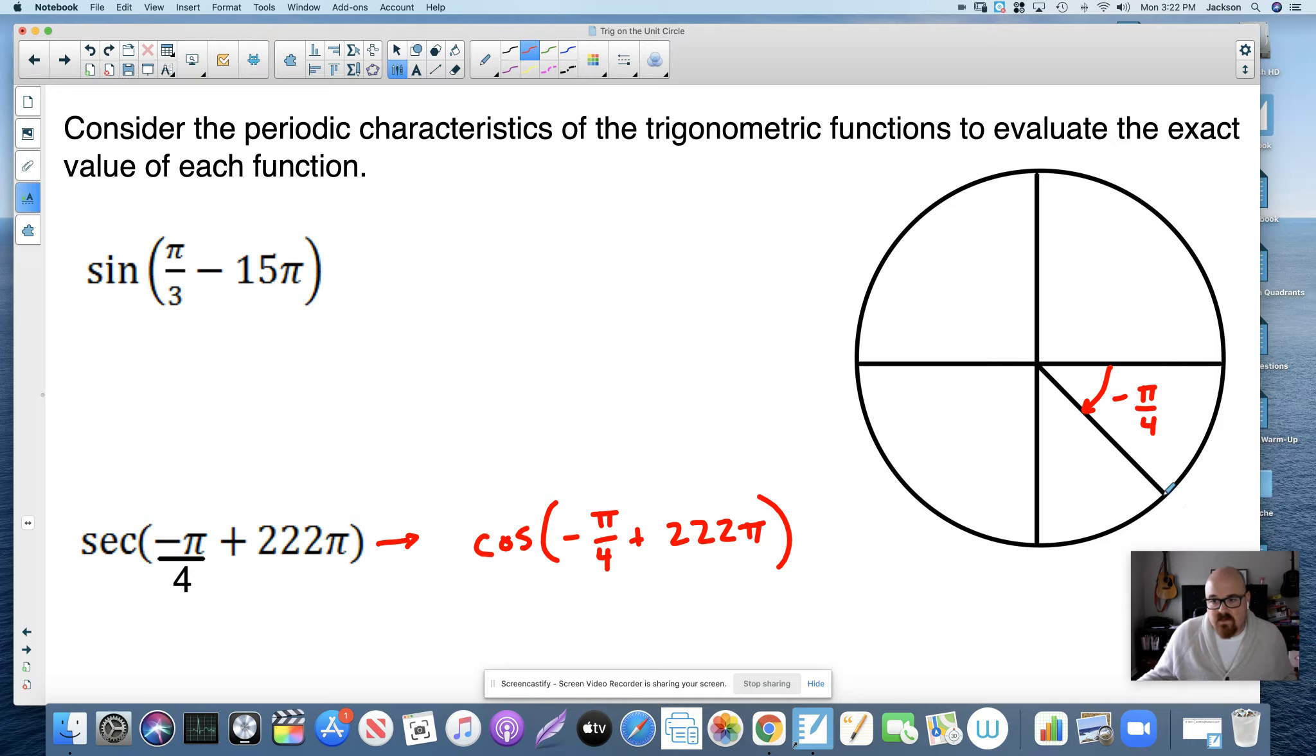Now, this is where negative pi over 4 is. It's right here. Where's negative pi over 4 and then adding 222 pi? I don't want to make you dizzy, but let's think about this for a second.